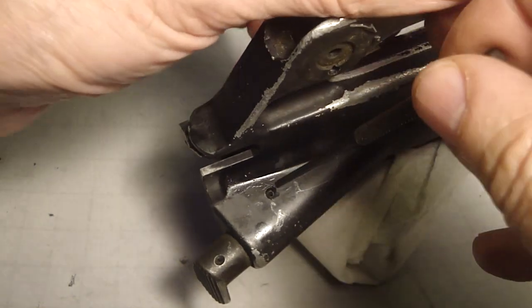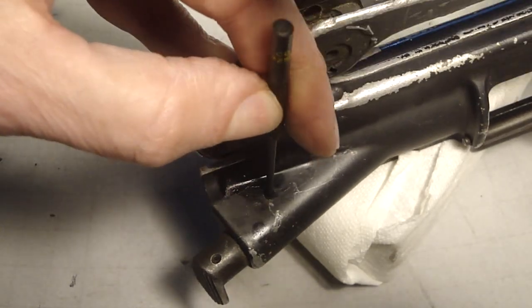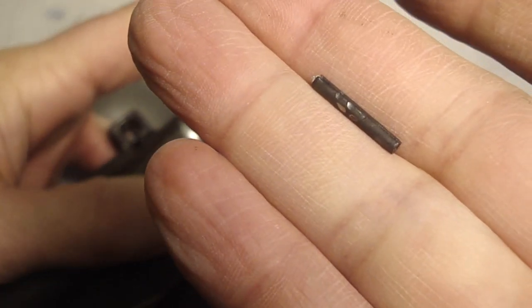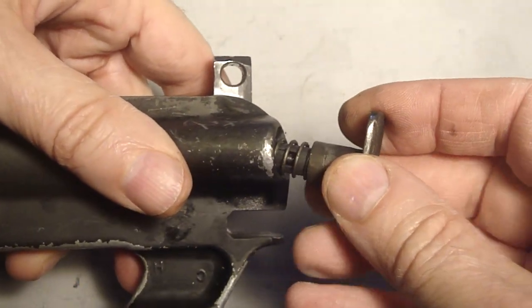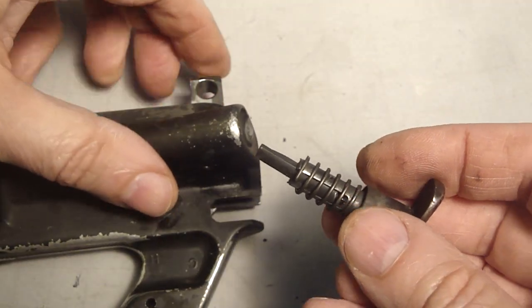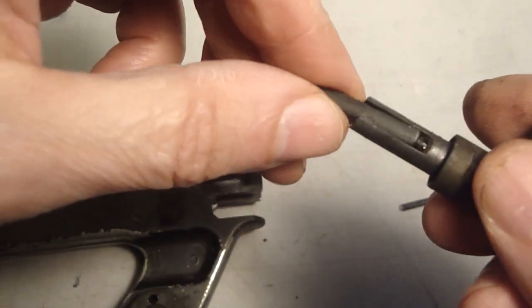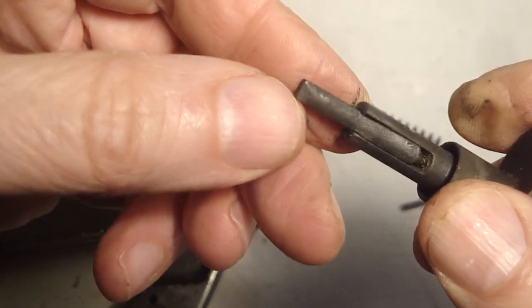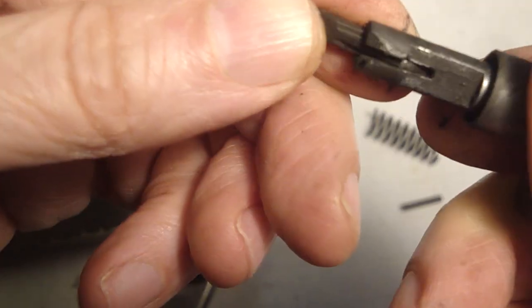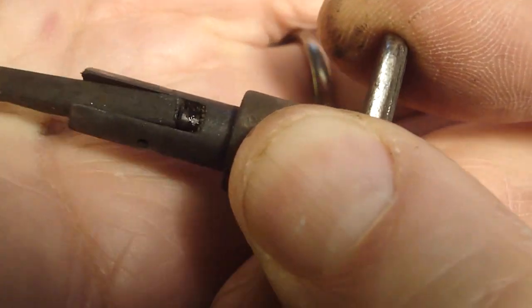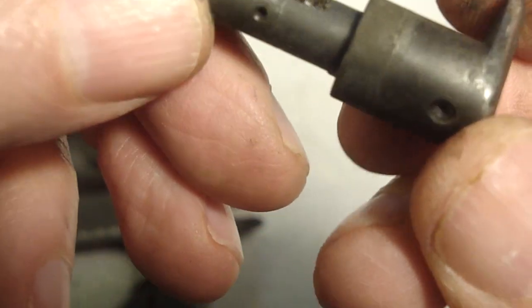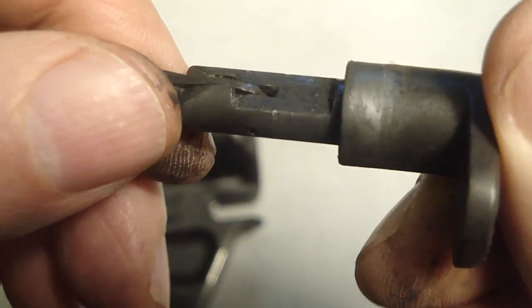I'm going to knock out the roll pin that holds in the forward assist. There's a roll pin for the forward assist. Looks like there's another roll pin in there. There's a spring and plunger in there. See that. I don't think I'm going to take it down any further. I'm just going to soak in kerosene and then blow it out.